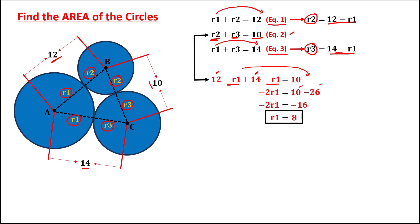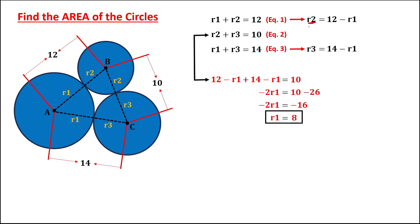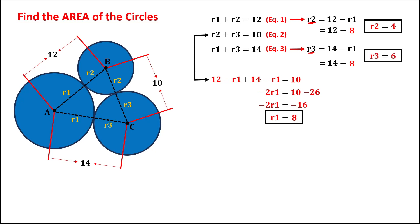So R1 equals 8 is now the value for the radius of circle A. To find the radius of circle B, that's R2: from equation 1, we have 12 minus R1, and R1 is 8, so R2 is equal to 4. And for R3, we have 14 minus R1, and R1 is 8, so R3 is equal to 6.